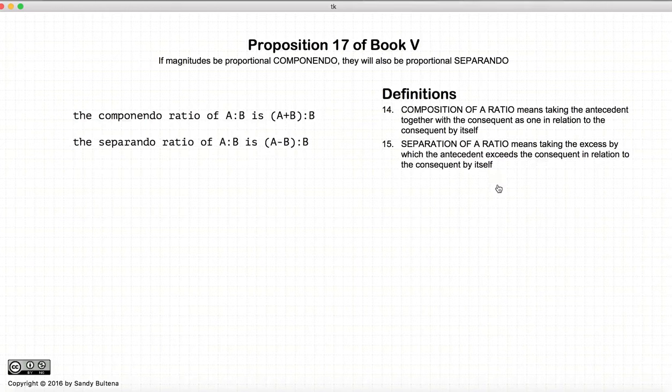Now before we begin, we have some more definitions. Definition 14 and 15. The componendo ratio of a to b, so we have a ratio a to b, and the componendo ratio of a to b is we take the sum of the consequent and the antecedent and compare it to the consequent. So in other words, the componendo ratio is a plus b to b.